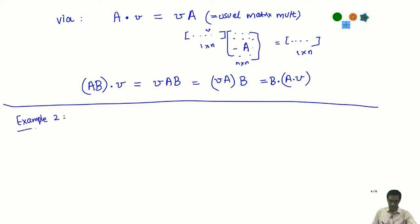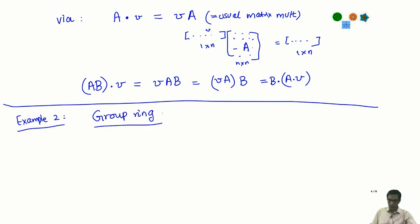Time for another example. Let us take Example 2. Now I will take the ring R to be a group ring. Recall from the lectures on rings that the group ring of a finite group: let G be a finite group, and let K be a field.